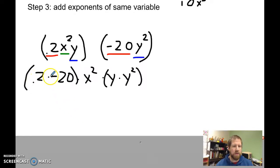So 0.2 times negative 20 is going to be negative 4. Basically, I have 2 for each 10, is the way I think about it. Then I've got my x squared, that's alone, so I'm just going to bring it down. And then I've got y times y squared, or y to the first times y to the second, so that's going to be y to the third.